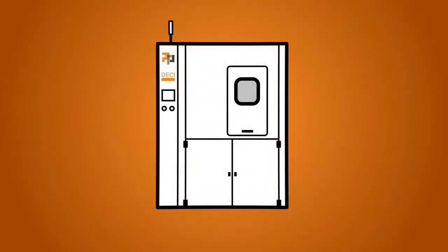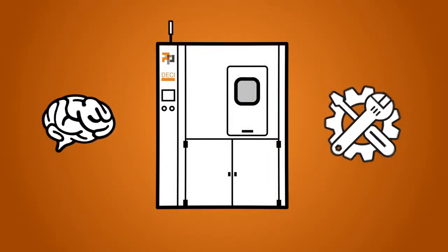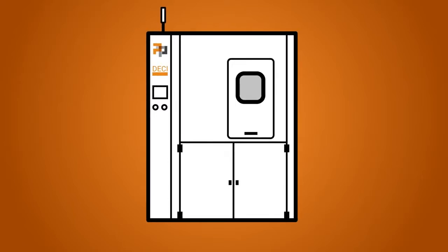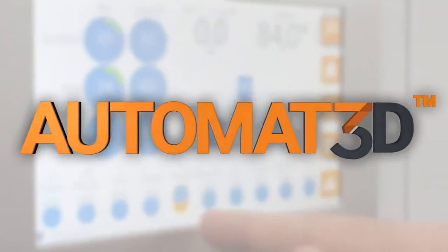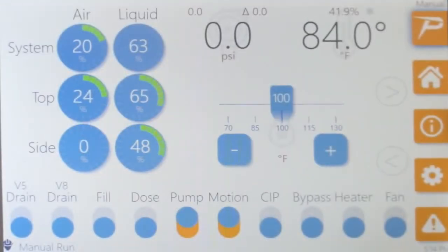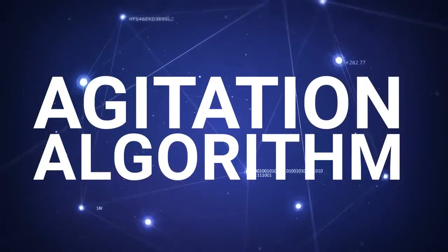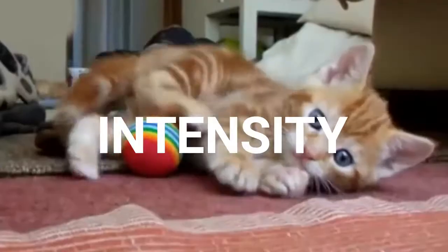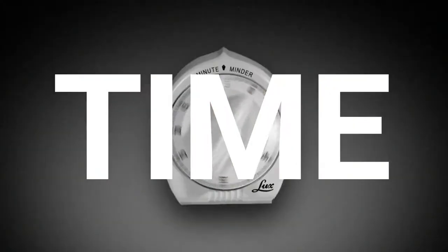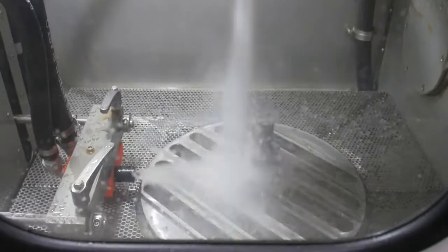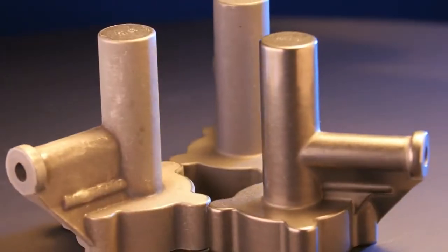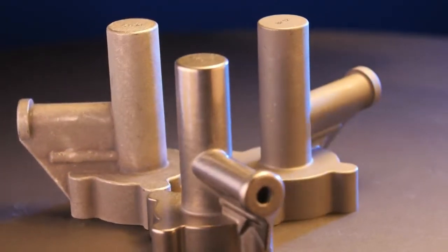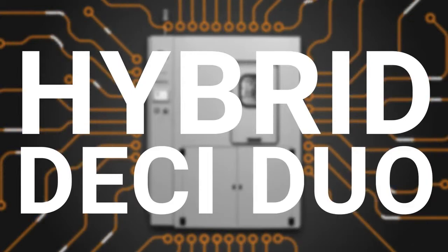The DESI DUO is your operator and maintenance manager rolled into one. Driven by our custom automated software, our proprietary agitation algorithm offers preset recipe programs of varying agitation intensity levels, process times and temperatures to accurately produce a final part meeting your unique specifications.